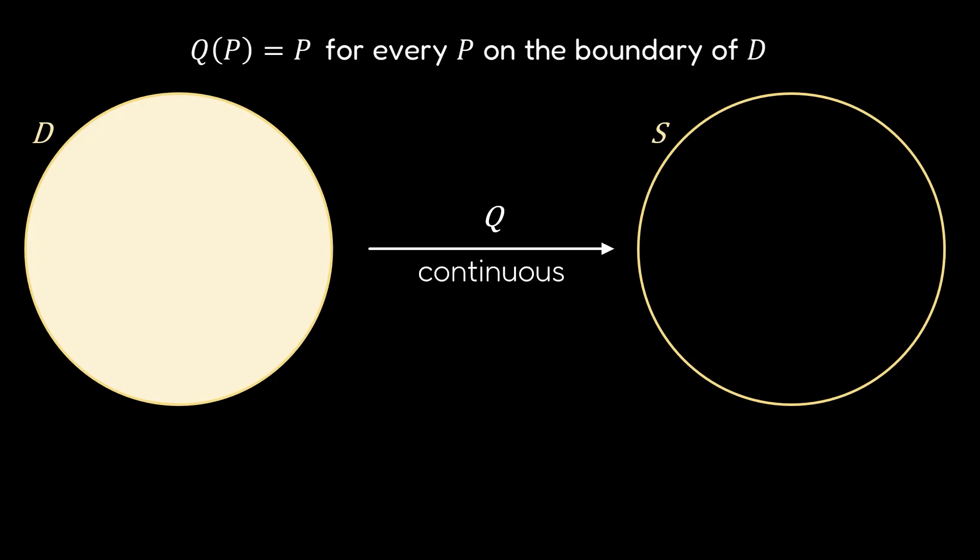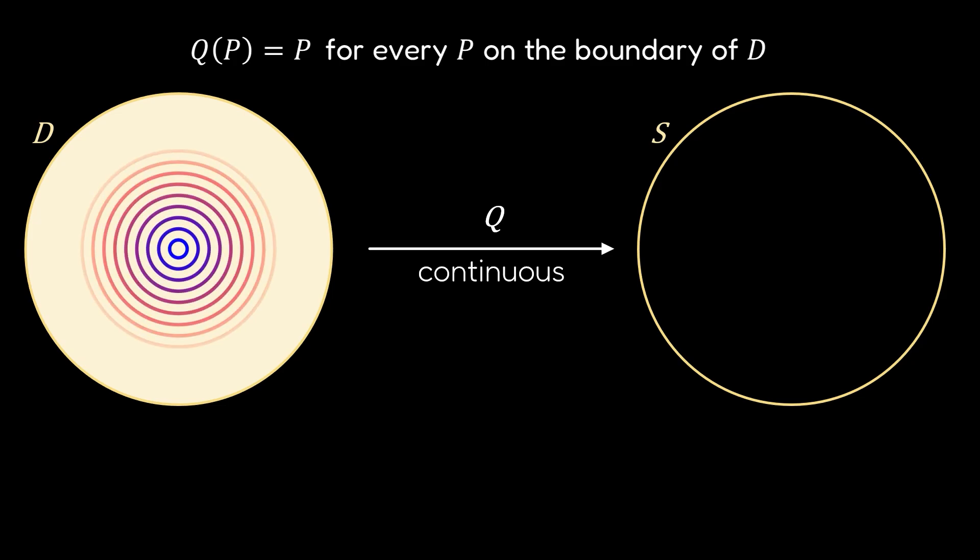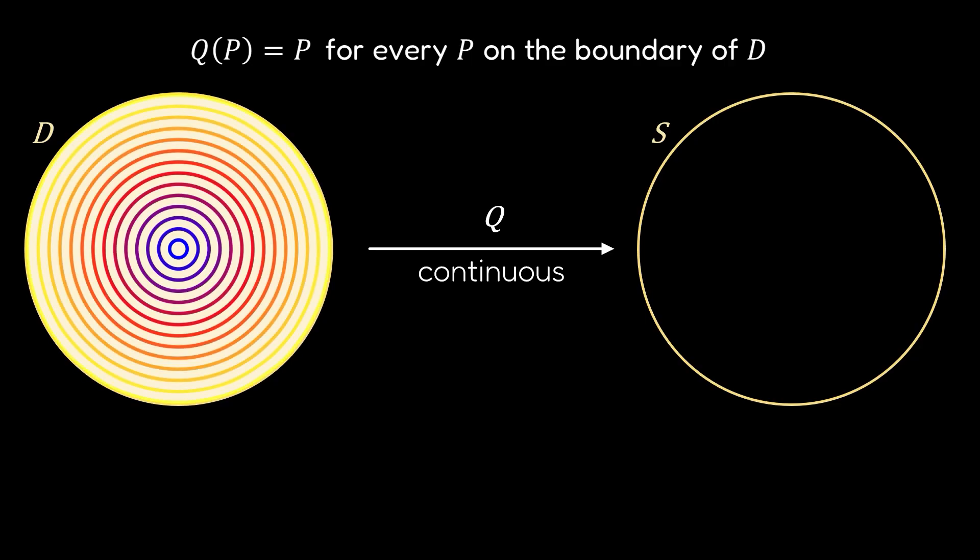They will allow us to reach a contradiction. To do that, we need to partition the disk. Don't worry, nothing that will harm your laptop. We are simply dividing the starting disk into a union of concentric circles that we'll call loops.